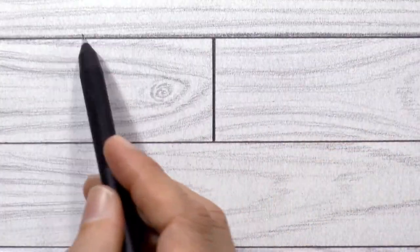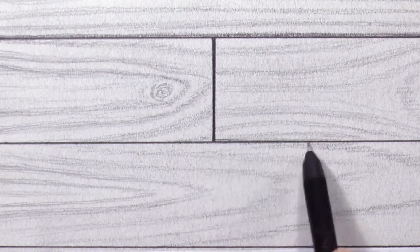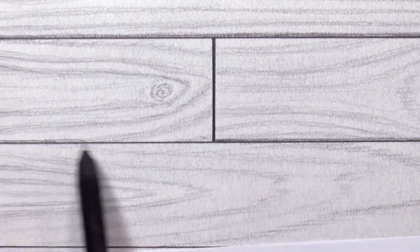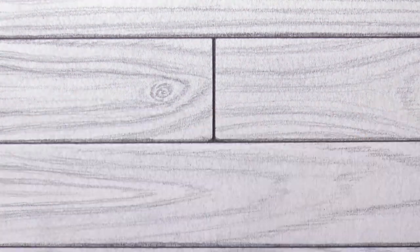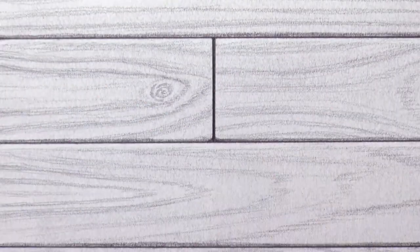The lower edge of each board should have a shadow, as in this case the light will be coming from the top right. And with an eraser, we can lighten up the top of the boards.